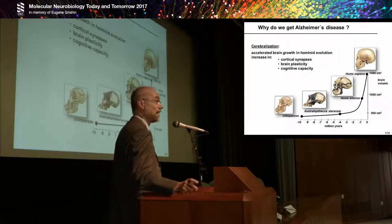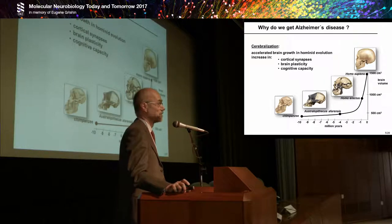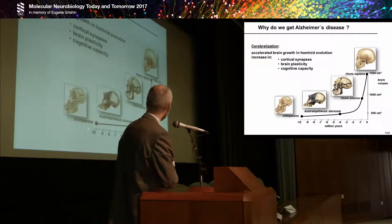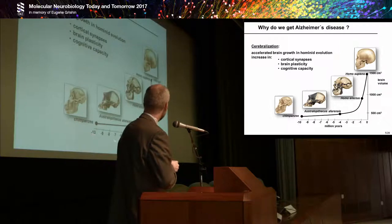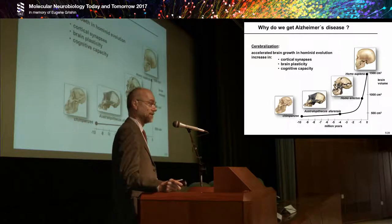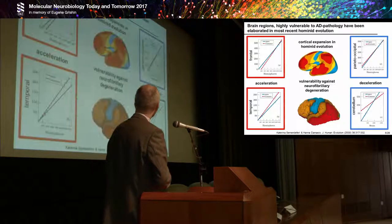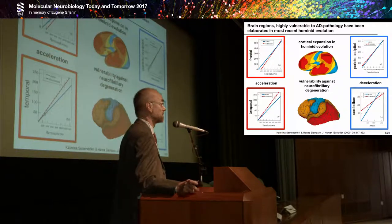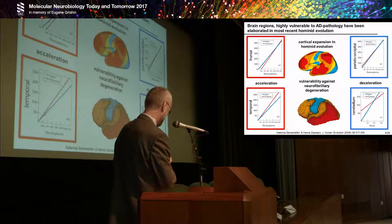So why do we get Alzheimer's disease? The quick answer is: because we have such a big brain. This brain evolved during recent hominid evolution over the last 10 million years or so, with an enormous increase in brain volume enabling higher cognitive capacity through increased numbers of cortical synapses and increased brain plasticity. Comparing brain areas affected earliest and most constantly by the disease, it becomes apparent that these are the same areas which evolved only during recent hominid evolution.